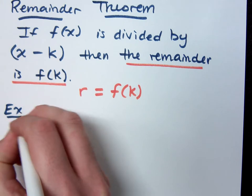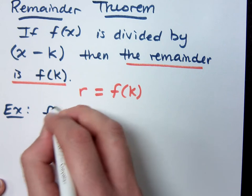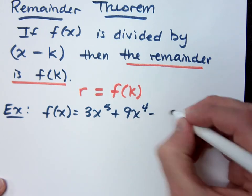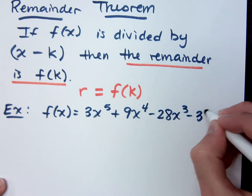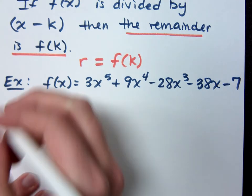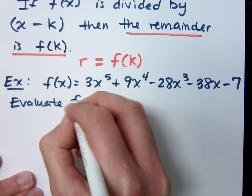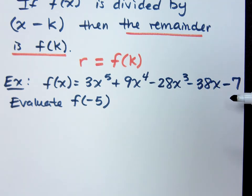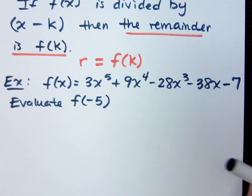Let me give you an example. If this is my function — f of x is 3x to the 5th plus 9x to the 4th minus 28x to the 3rd minus 38x minus 7 — I can then say: evaluate f of negative 5. Your test will have two parts, one without a calculator and one with. This is going to be on the part without a calculator. Some students are going to plug negative 5 in and evaluate it directly. You can do that, but I don't recommend it, especially if the instructions say to use synthetic division and the remainder theorem to evaluate.